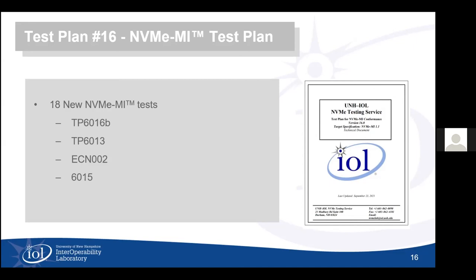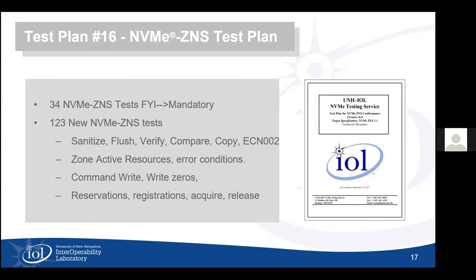Moving to the ZNS test plan, which came out at our last Plugfest — Plugfest 16 in June of this year. From those test results, we were able to move 34 ZNS (Zoned Namespace) tests from FYI to mandatory. Since then, 123 new tests have been added in version 16 of the ZNS test plan. These deal with NVM-type tests that have been brought across to deal with ZNS, similar to how NVM features are tested but now applied to ZNS devices.